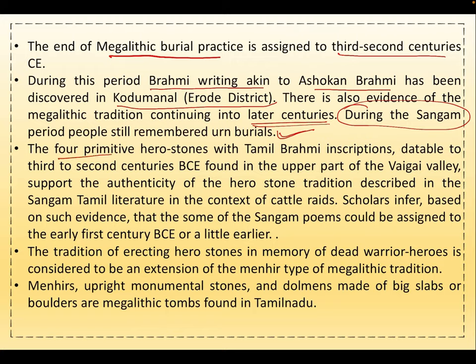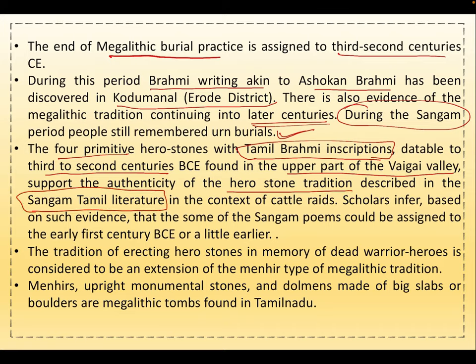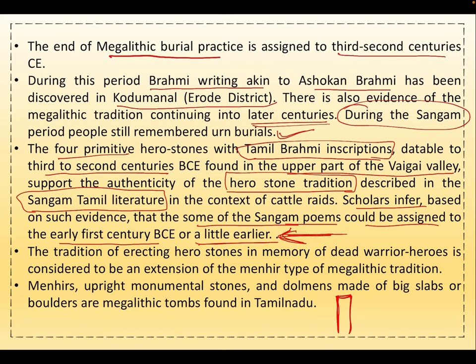Four primitive hero stones with Tamil Brahmi inscriptions, datable to the third to second centuries BCE, were found in the upper part of the Vaigai Valley. These support the authenticity of the hero stone tradition described in Sangam Tamil literature. Scholars infer that some of the Sangam poems could be assigned to the early first century BCE or a little earlier. The tradition of erecting hero stones in memory of dead warrior heroes is considered an extension of the menhir type of megalithic tradition.